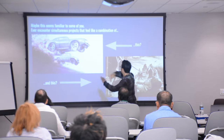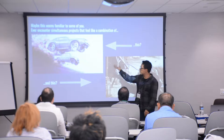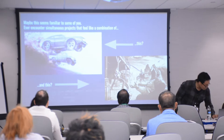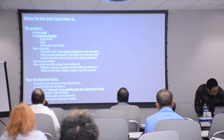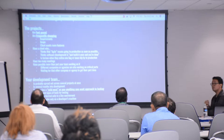Does any of this feel familiar? Simultaneous projects — fires everywhere, all sorts of explosions — and it feels like the Wild West. It's not happening sequentially: first this, then that. It's all happening at the same time. Before the lone tester shows up, the projects are fast-paced, frequently changing. The requirements scope grows, the client wants more features. You have a client who thinks that agile means you'll get to production next week.